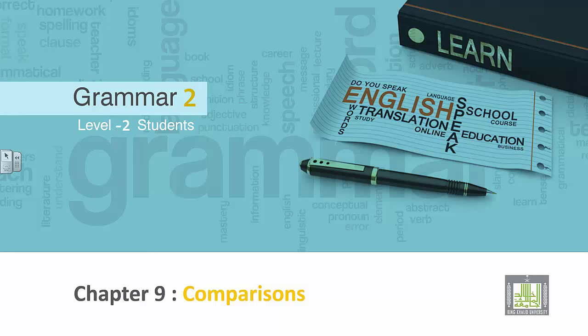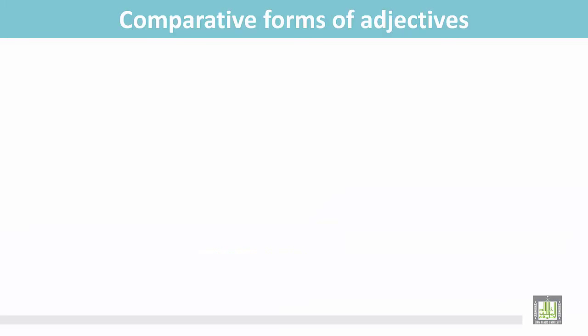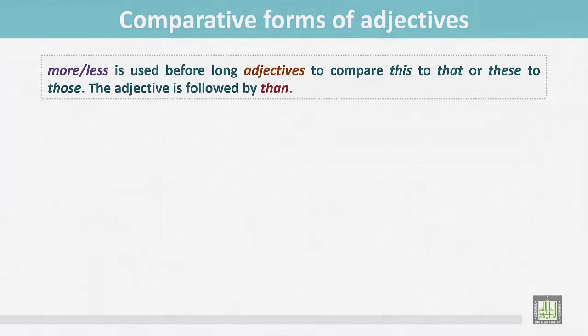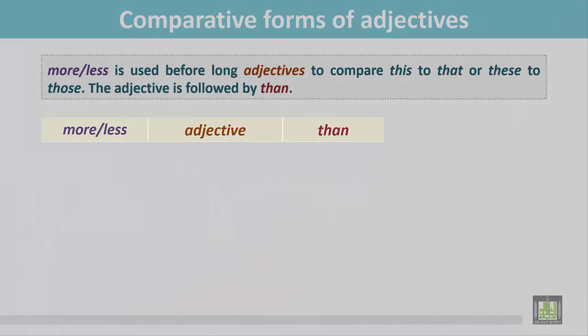Grammar 2 for Level 2 students, Chapter 9: Comparisons — Comparative forms of adjectives. More or less is used before long adjectives. To compare this to that, or these to those, the adjective is followed by 'than.' See the structure: the adjective is followed by 'than,' and more or less is placed before the adjective.